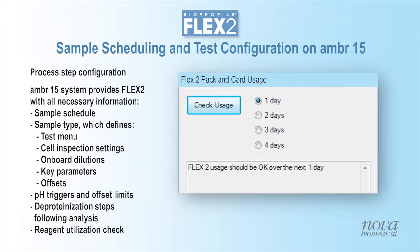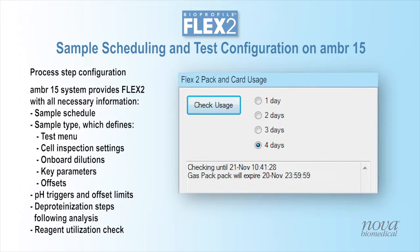AMBER software allows users to check for sufficient Flex2 reagents to ensure all scheduled testing can be completed for up to 4 days of scheduled samples. If reagents will be depleted or expired within the desired period, AMBER software will provide a warning, reminding users that replacement of reagents will be necessary in order to complete all scheduled analysis steps.